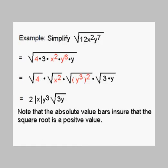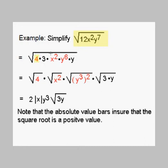Now we are going to look at another example where we simplify a radical and end up with an absolute value in our answer. We are going to simplify the square root of 12x squared y to the 7th. Like the previous example where we found perfect cubes, here we look for perfect squares. 12 can be written as the perfect square 4 times 3. x squared itself is a perfect square. y to the 7th can be written as y to the 6th times y, and y to the 6th is the perfect square y cubed quantity squared.